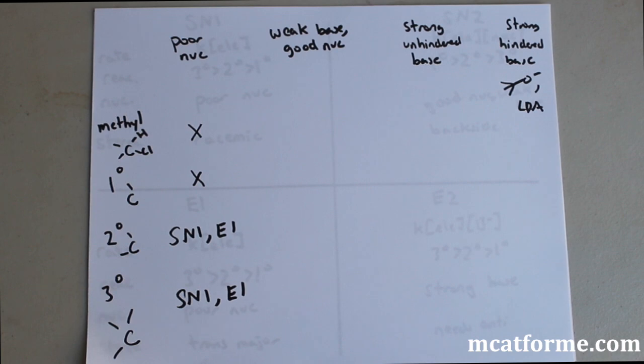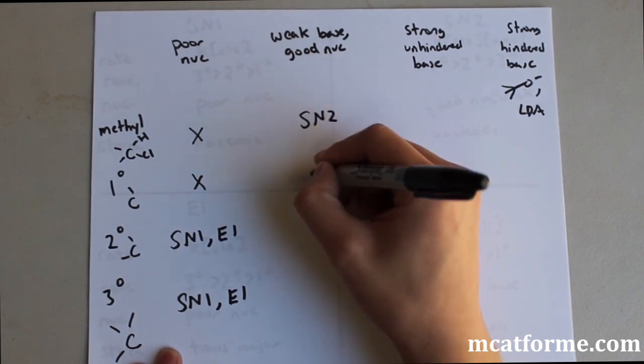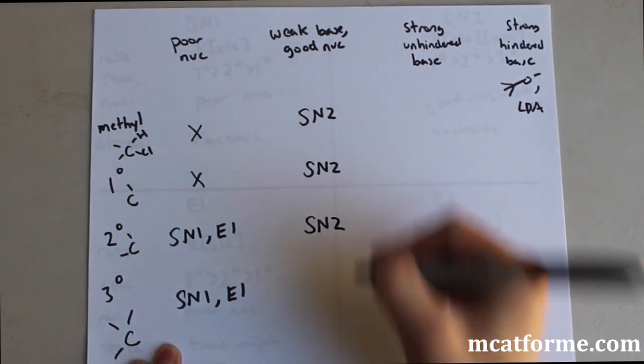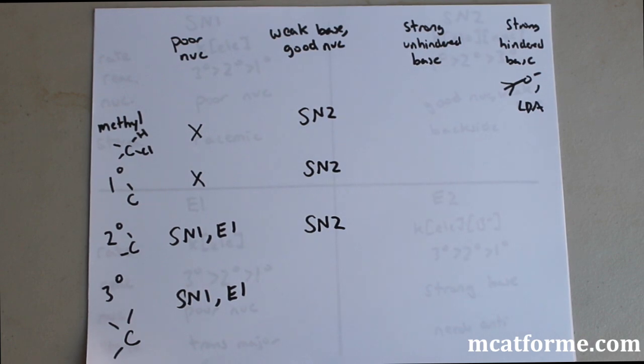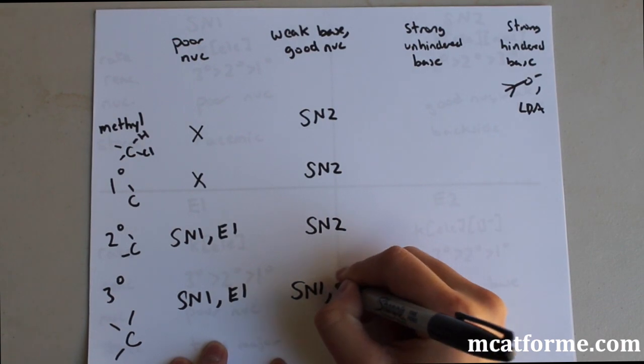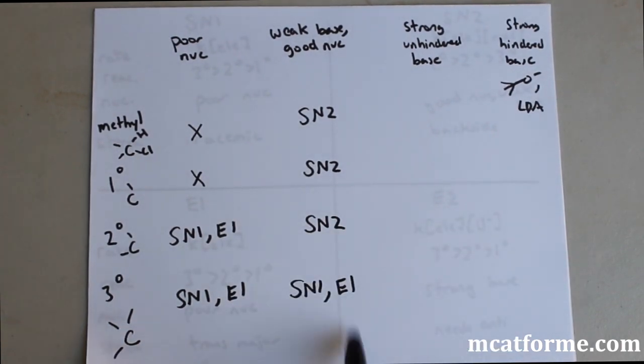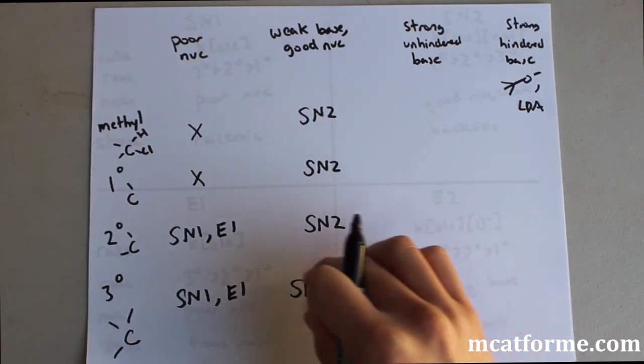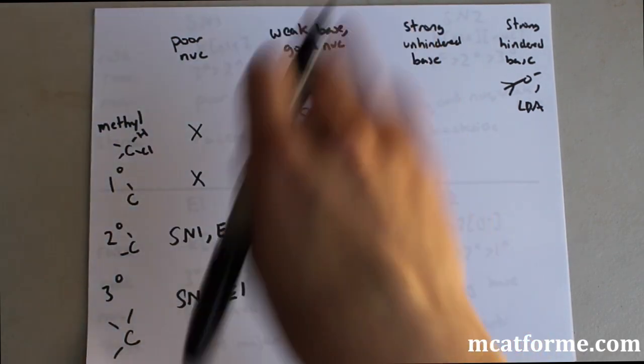For weak base or good nucleophile, remember these are stuff like the halogens. This should ring a bell of SN2. We see that we have SN2 for methyl through secondary. But for tertiary, it's actually not the case. Remember from before, a tertiary SN2 is probably very unreactive, but a tertiary SN1 or a tertiary carbocation is very reactive. So that's why for this one, it's going to be SN1, E1. This is kind of one of the anomalies that we can remember. The best way to remember this table is to remember the differences. In this case, remember these x's and remember in this box SN1, E1. The rest should be obvious.